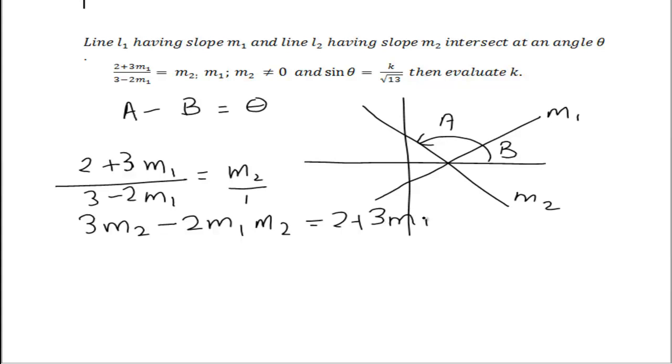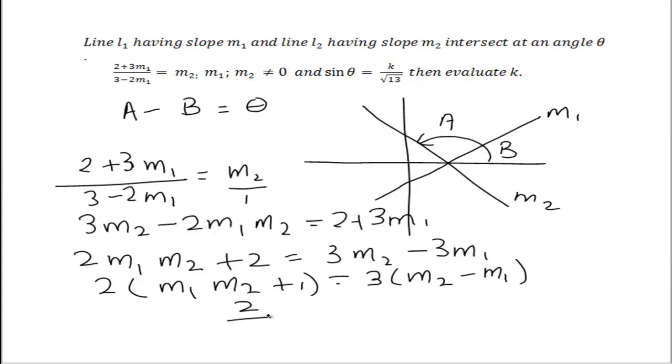We will have 2M1M2 plus 2, and then 3M2 minus 3M1. If I remove the common factor, I get 2 into (M1M2 + 1). Remove the common factor here, I've got 3 into (M2 - M1). Then 2/3 equals (M2 - M1) over (1 + M1M2).